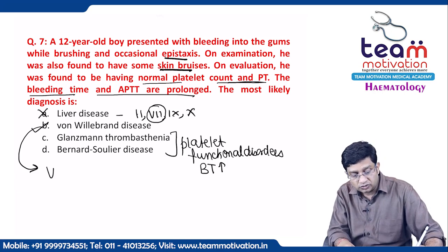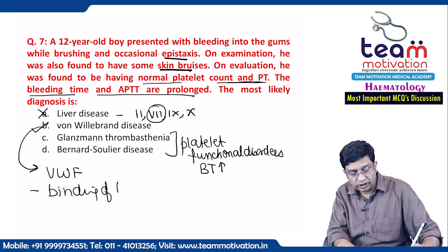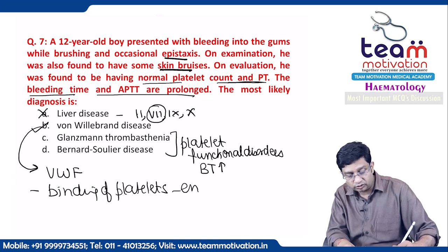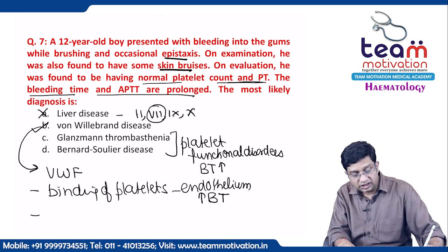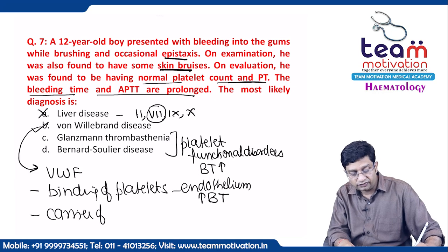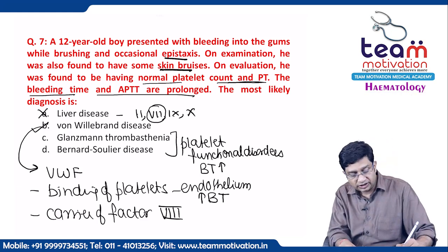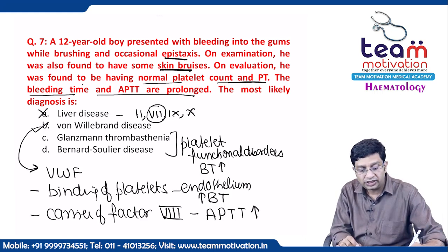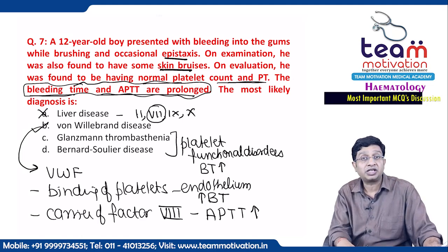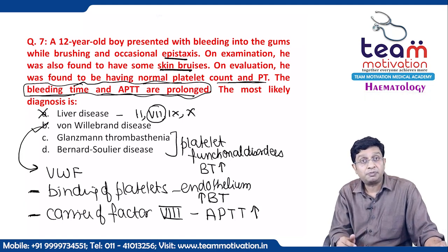The answer is von Willebrand disease. Von Willebrand factor has two effects: first, it mediates binding of platelets to endothelium — if impaired, bleeding time increases. Second, it is a carrier of factor 8 — if deficient, aPTT increases. Both findings of prolonged bleeding time and prolonged aPTT are explained by von Willebrand disease.